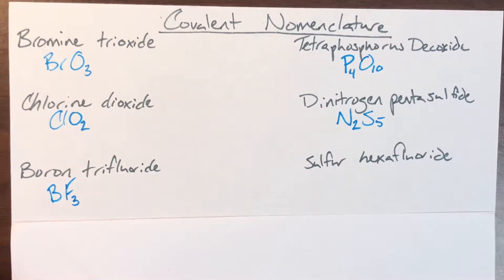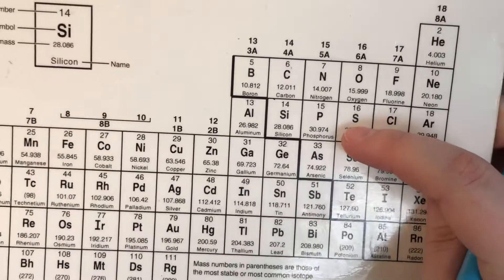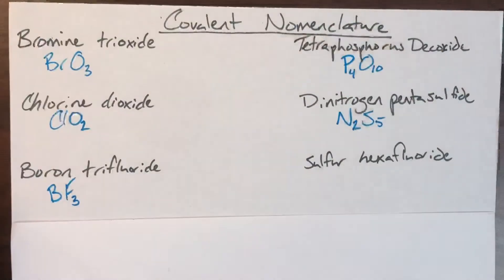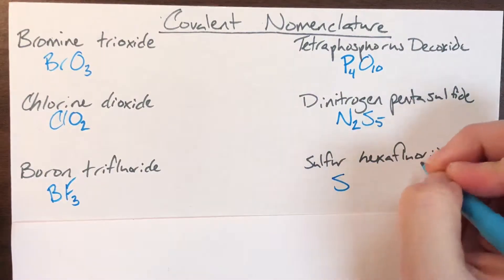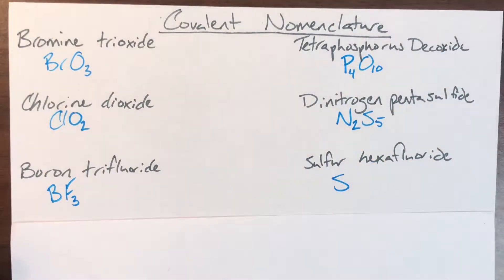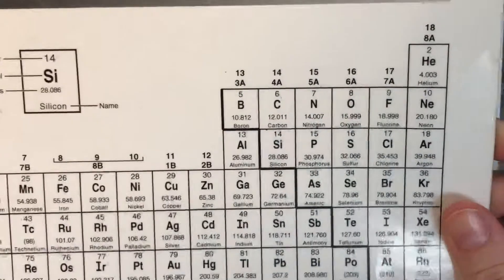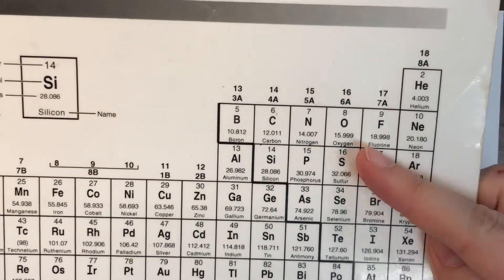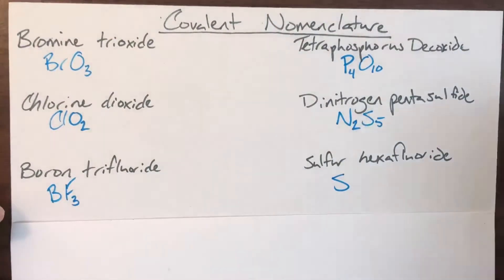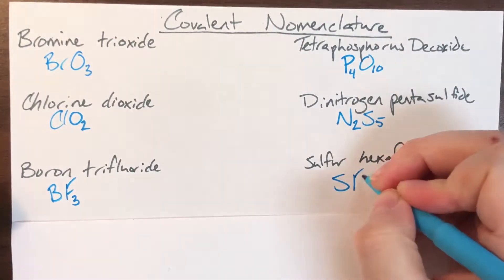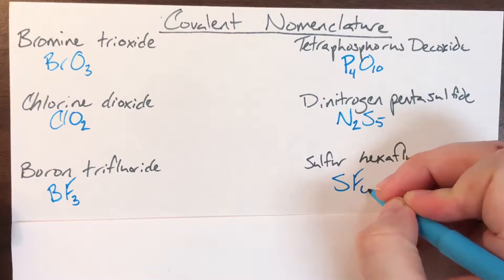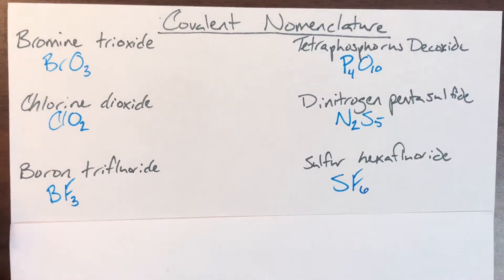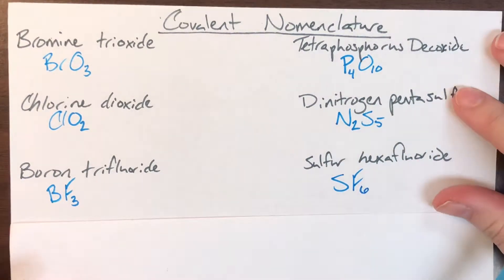Sulfur hexafluoride. Sulfur is S. Hexafluoride: fluoride is fluorine, which is F, and hexa means 6. So the formula is SF6.